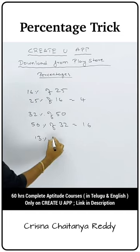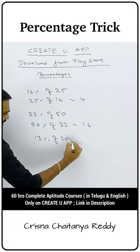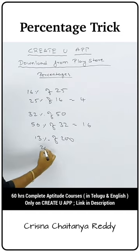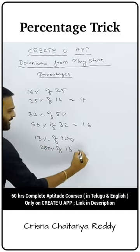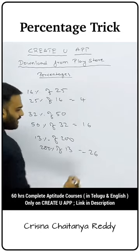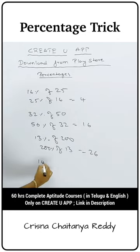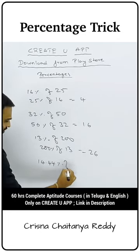13% of 200 — flip it to 200% of 13. 13 doubled is 26. So 13% of 200 equals 26.